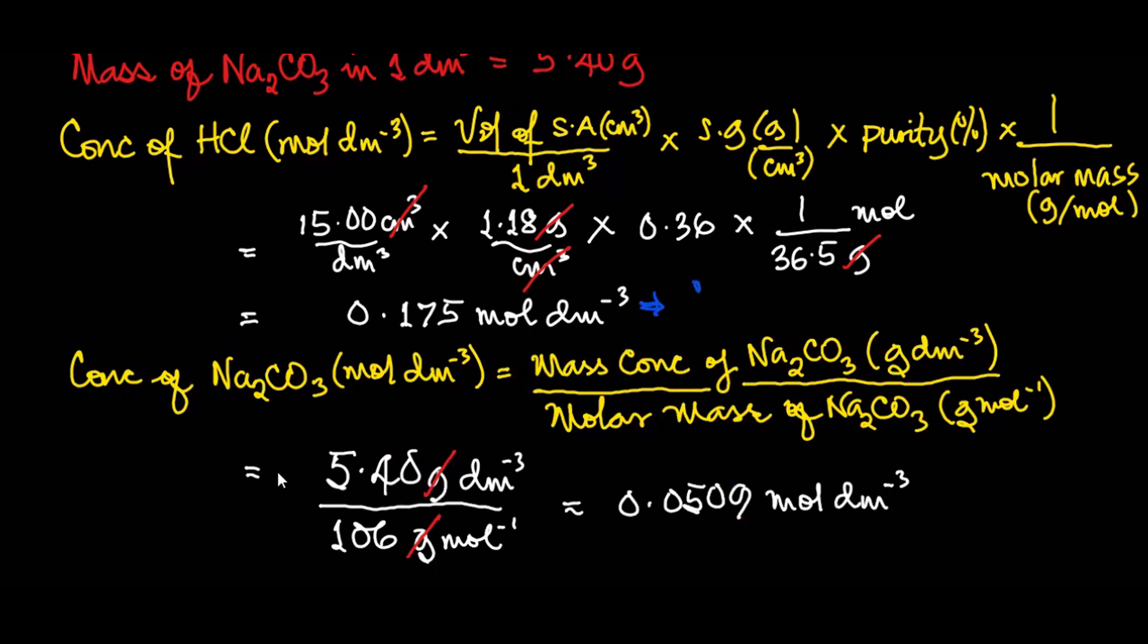So at this point, this is your CA and this is your CB, so take note of that. Now that we know the concentration of the acid in mol/dm³ and the concentration of the base in mol/dm³, we're now going to use this to determine the titre value.